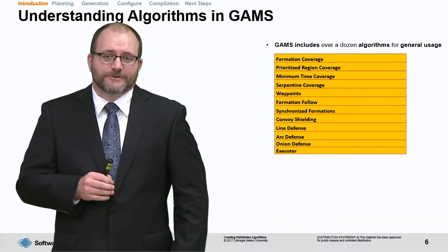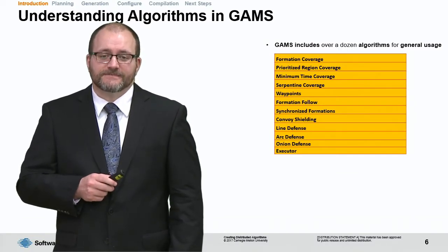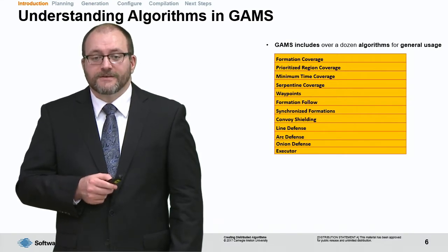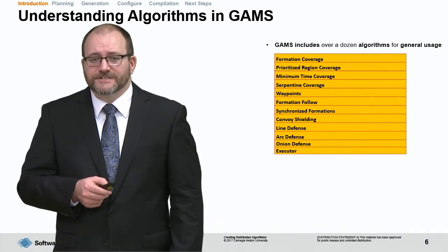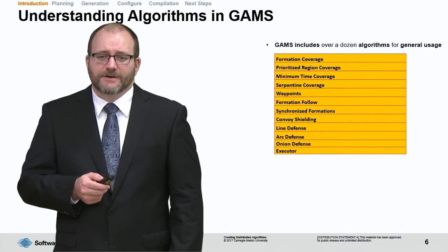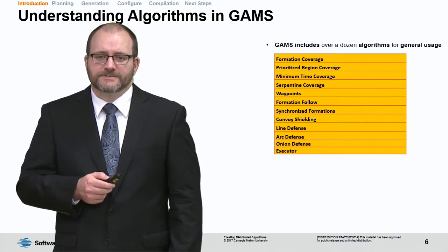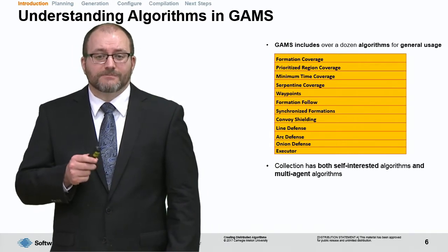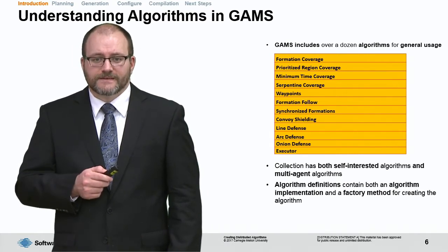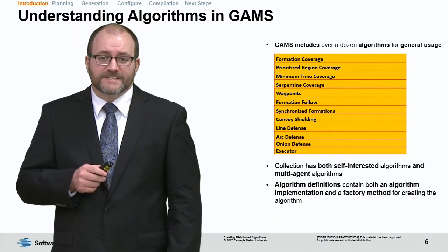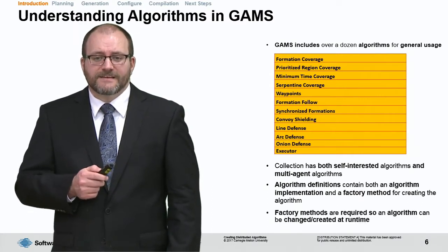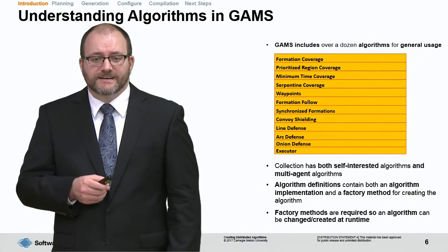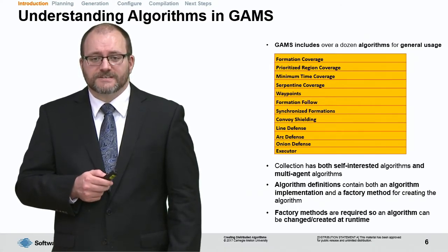GAMS includes over a dozen algorithms for general-purpose usage. These include coverage algorithms for applications like search and rescue, waypoints and executor functions for general-purpose things, and also some adversarial algorithms that you can try out in your own simulations. The collection has both self-interested agent algorithms and multi-agent algorithms. Algorithm definitions contain both an algorithm implementation and a factory method. This factory method is important because it allows us to change an algorithm at runtime whenever we feel the situation dictates it.